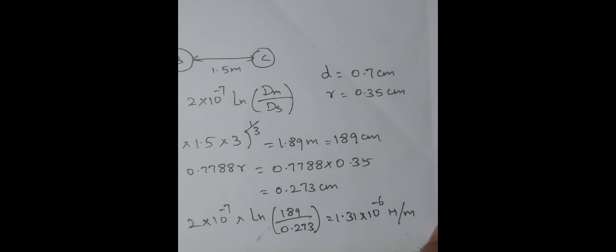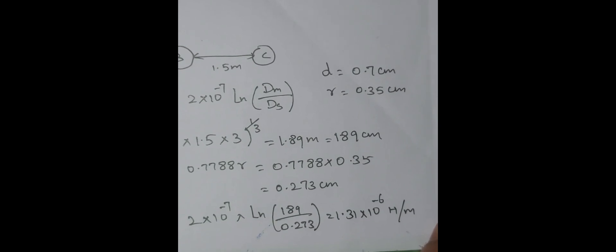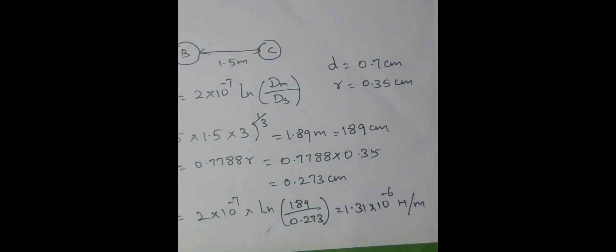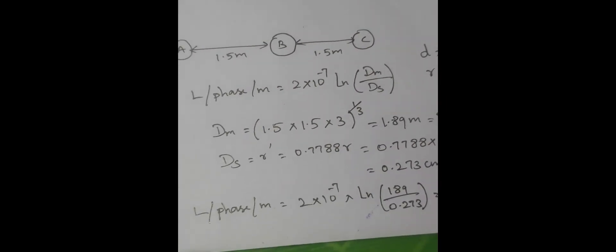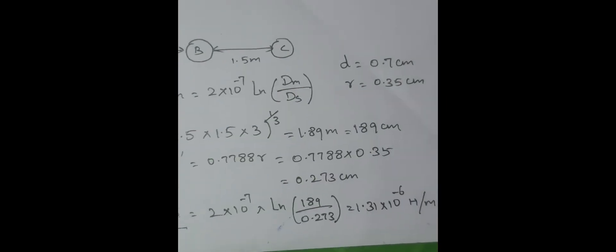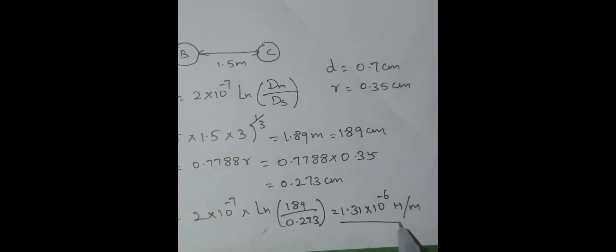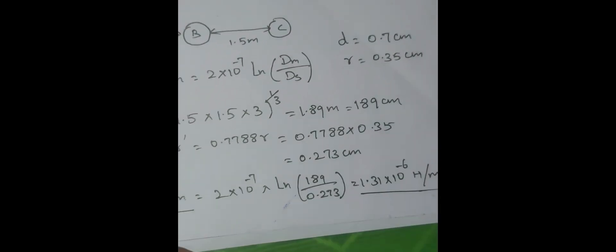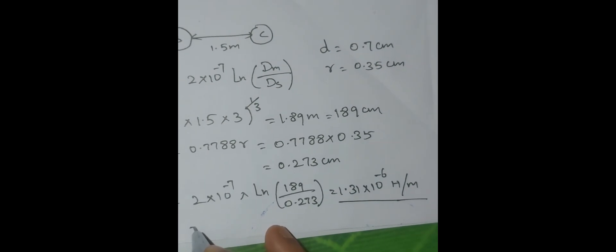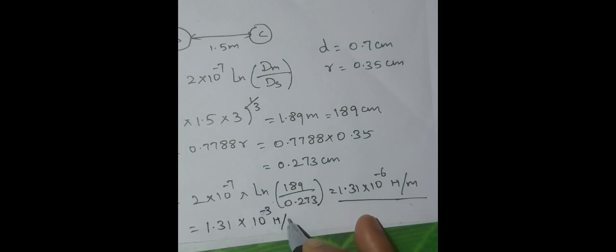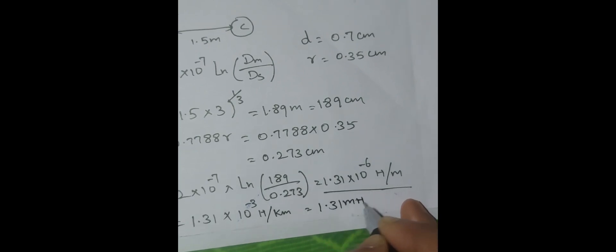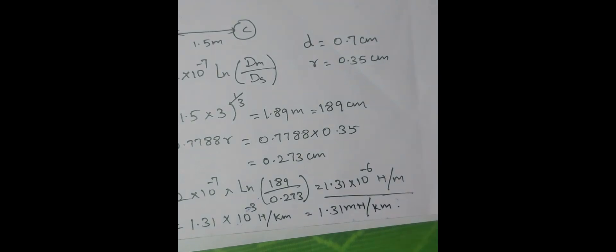If they ask you to convert it for kilometer means we have to multiply by 10 power 3000. Now they did not ask anything, so inductance per phase meter is equal to 1.31 into 10 power minus 6 Henry per meter. But it is not wrong if you convert it into per kilometer. If you do that one, generally 1.31 into 10 power minus 3 Henry per kilometer, which again can be rewritten as 1.31 mH per kilometer. Thank you.